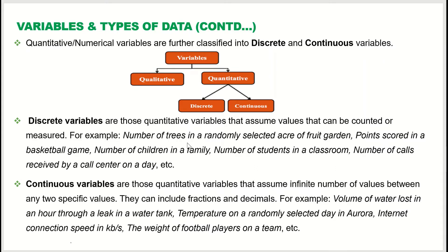For example, the number of trees in a randomly selected acre of a fruit garden can be five, six, or seven — we don't say 2.3 trees. So it does not include fractions or decimals; these are whole numbers only. Points scored in a basketball game, number of children in a family, number of children in a classroom, and number of calls received by a call center in a day are all examples of discrete variables.